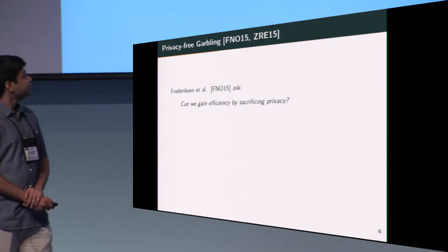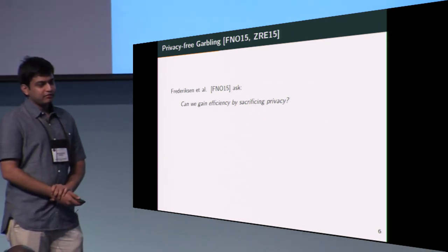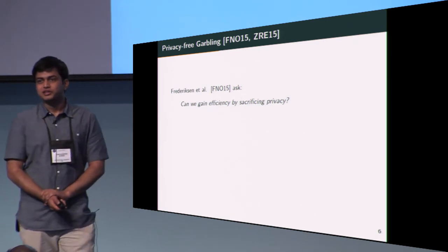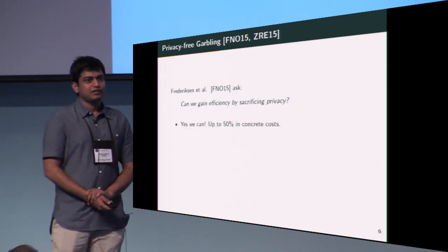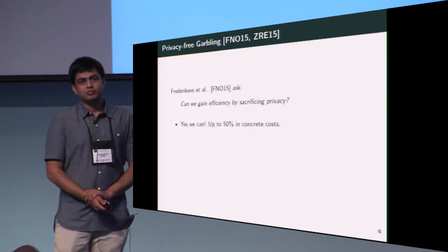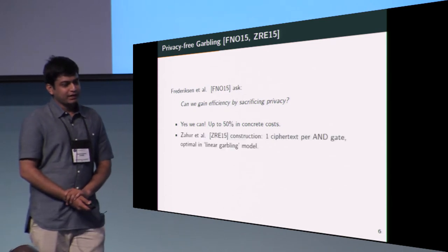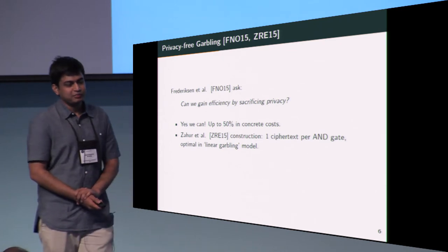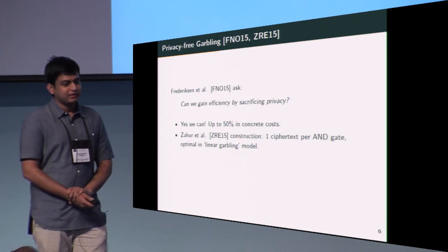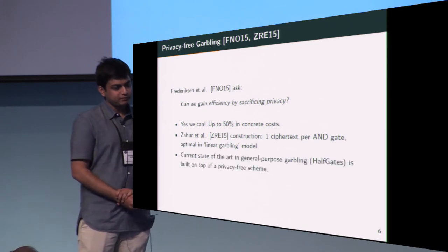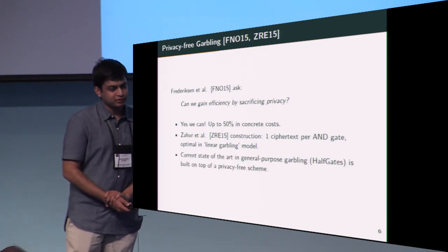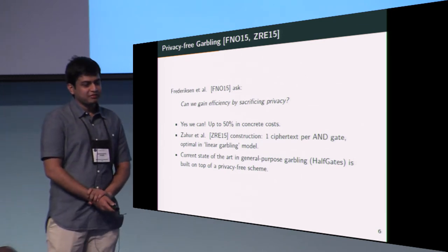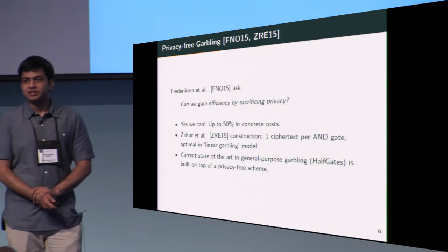Privacy-free garbling: Frederiksen and others ask if we can gain efficiency by sacrificing privacy so that a garbling scheme can achieve authenticity more efficiently, and they find that we can, up to 50% better in concrete costs. The state of the art, that's the construction by Zahur and others, requires only one ciphertext per AND gate and is optimal in the linear garbling model for privacy-free. Also, the current state of the art for general purpose garbling—half gates—is built on top of a privacy-free garbling scheme, so that's additional motivation to study the privacy-free setting.